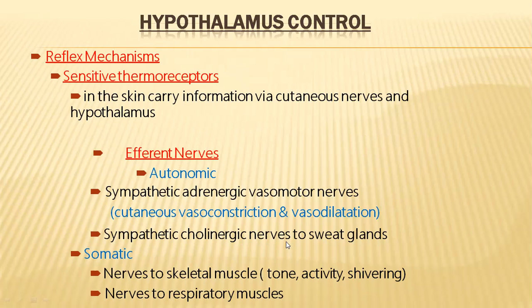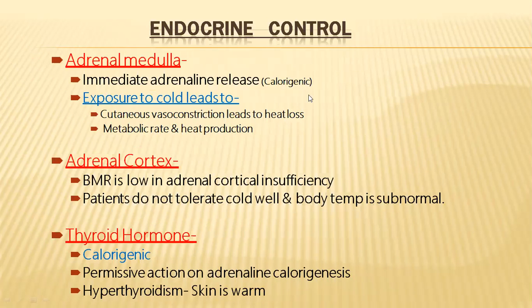Sympathetic cholinergic nerves send signals to sweat glands and during hot conditions stimulate sweat glands to generate sweat, causing heat loss. Somatic nerves send signals to skeletal muscles and respiratory muscles. Skeletal muscles perform shivering, which produces heat to help gain or produce temperature.